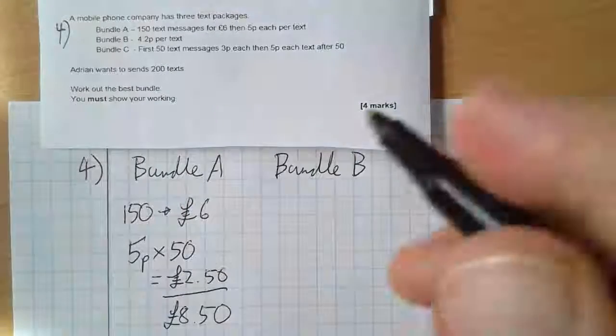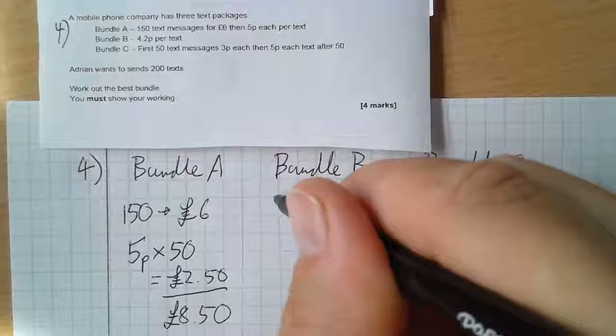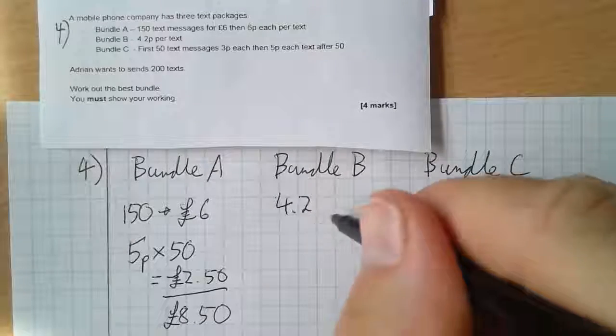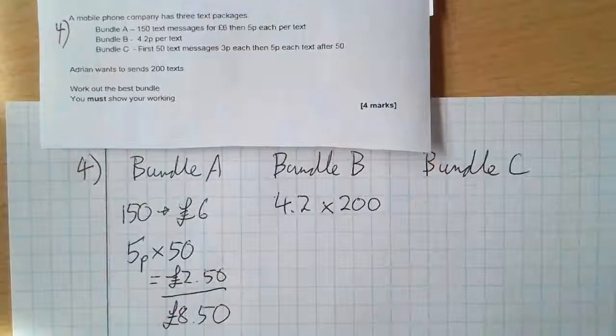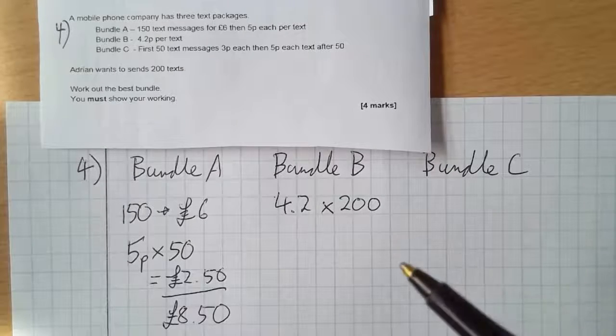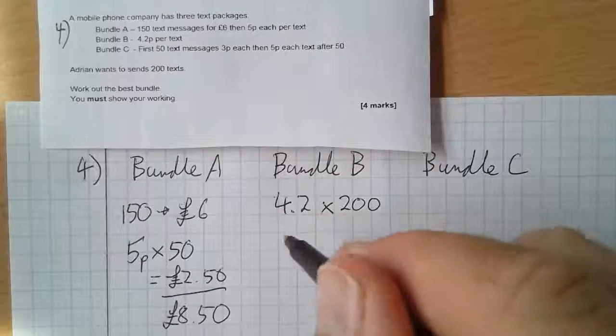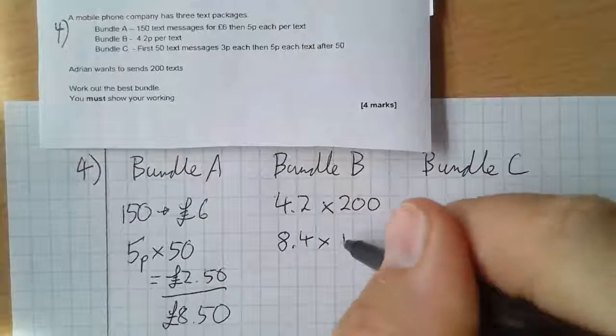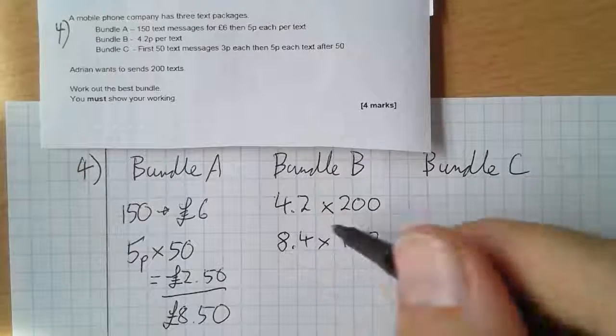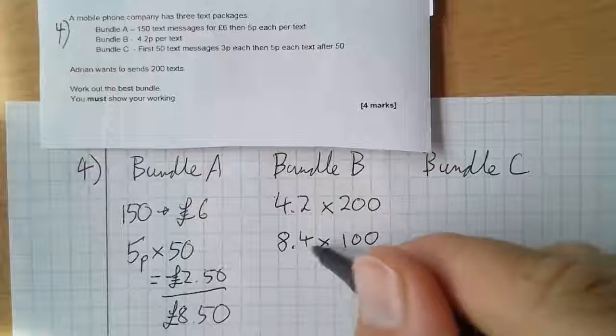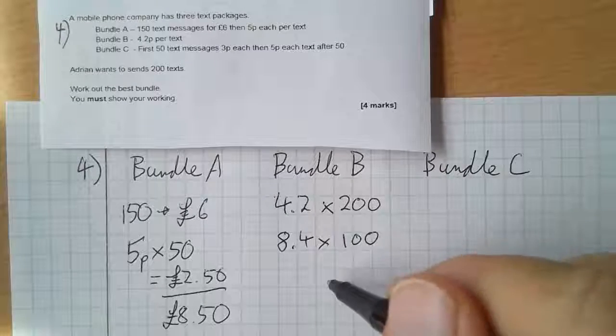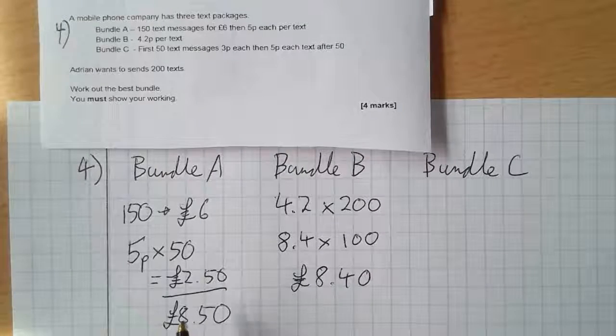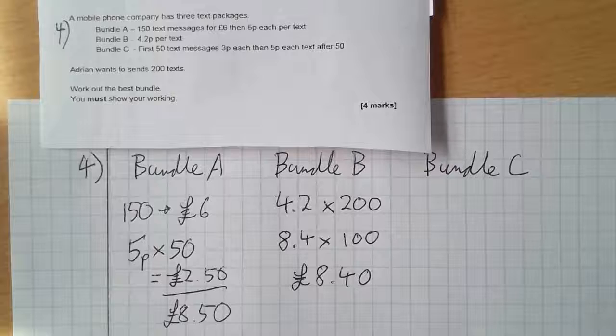Bundle B: 4.2p per text. Well, that's going to just be 4.2p - I'll work in pence to start with - and I'm gonna times that by 200. Well, in order to times it by 200, what I might do is times it by 2 and then times it by 100. So it's gonna be the same as 8.4 times by 100. So that would be 8.4, 840p, which is the same as £8.40. So a fraction cheaper than this one. Let's have a look at Bundle C.